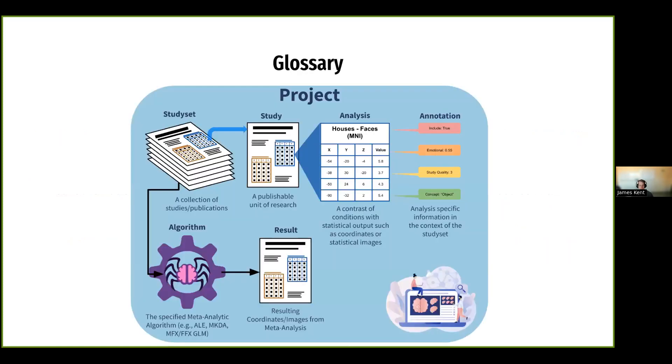So before we move on, I would just want to cover a few of the terms that are important to know within the Neurosynth Compose platform. When you log in, you'll be presented with a project. Project is the main item that you'll be working with inside the Neurosynth Compose platform. When you create a new project, you will then be moved into creating something called a study set, which is a collection of studies. And a study is a publishable unit of research. It doesn't have to be published, but typically everything that we have ingested has a publishable DOI or PMID.